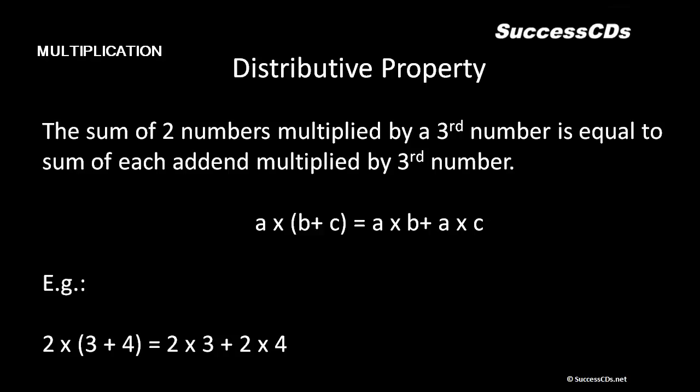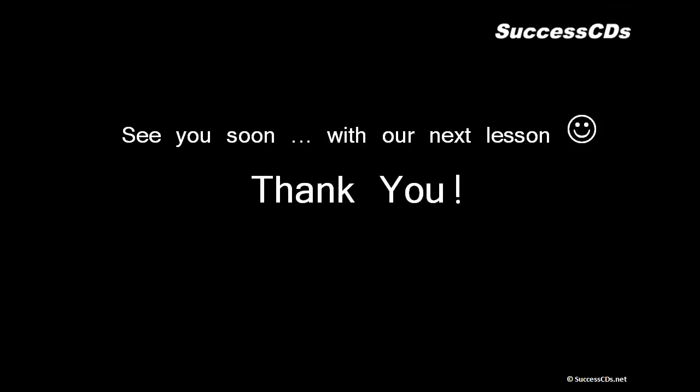Next is the distributive property for multiplication: the sum of two numbers multiplied by a third number equals the sum of each addend multiplied by the third number separately. That means a into (b plus c) equals a into b plus a into c. For example, two into (three plus four) equals two into three plus two into four. I hope you understood the properties of addition and multiplication — see you soon for the next lesson, thank you.